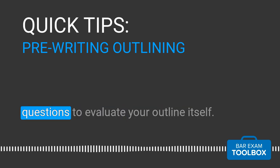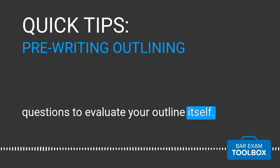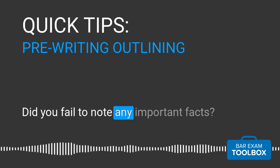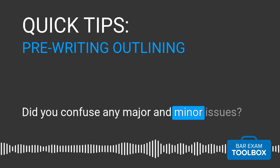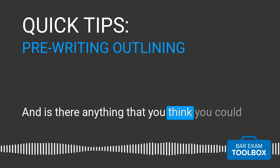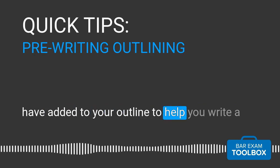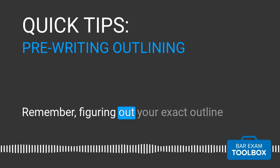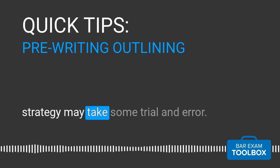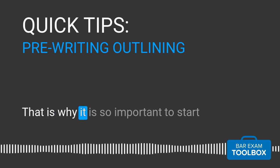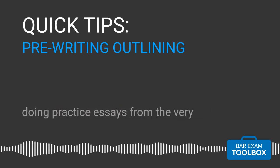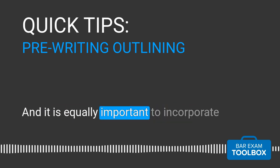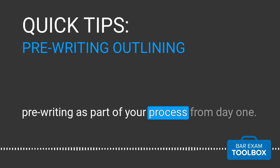You can also ask yourself a few questions to evaluate your outline. For example: Did you miss any issues? Did you fail to note any important facts? Did you confuse any major and minor issues? And is there anything you could have added to help you write a more complete and well-organized answer? Remember, figuring out your exact outline strategy may take some trial and error, which is why it is so important to start doing practice essays from the very beginning of your bar study period, and to incorporate pre-writing as part of your process from day one.